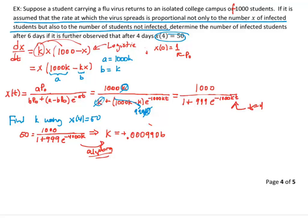So now I'll plug this k into my model and actually be able to write that x of t is equal to 1,000 divided by 1 plus 999 e to the. And if I multiply negative 1,000 times my k, I end up with a negative 0.9906 t.